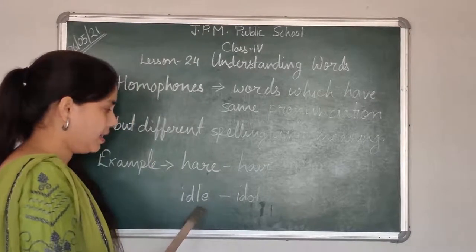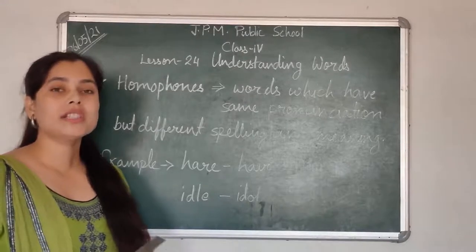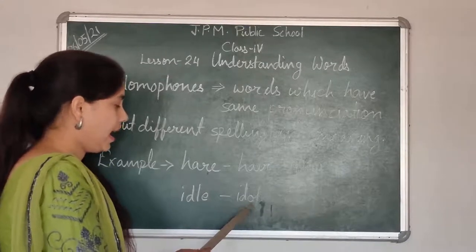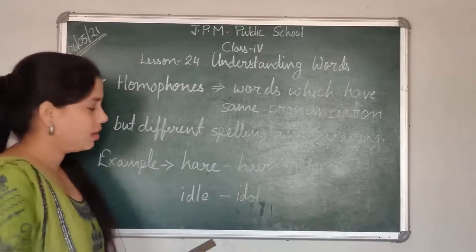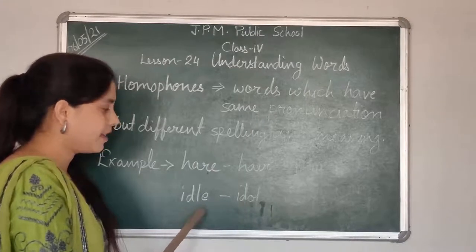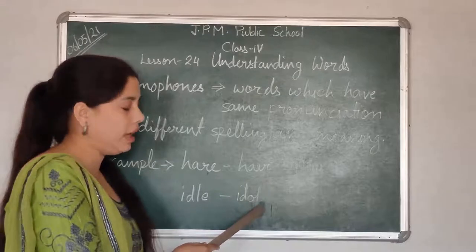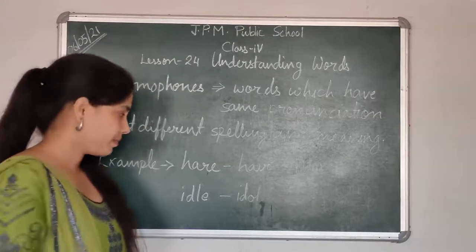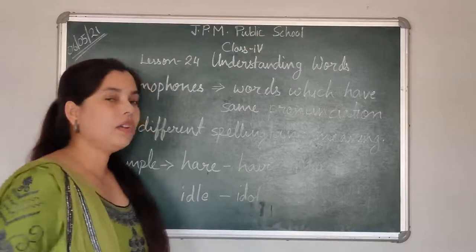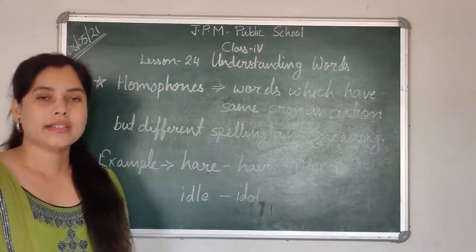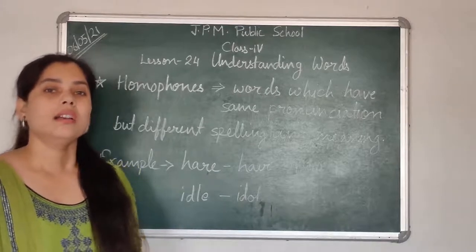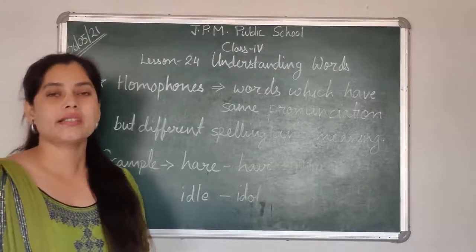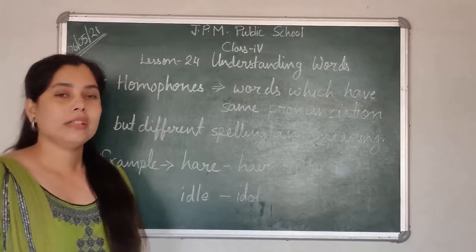Next, idle — I-D-L-E — means a person who is not having any work, without activity. Idol — I-D-O-L — also sounds alike. Both these words sound alike but they have different spellings and different meanings. Idol means a statue which is used by different peoples as God. Idol can also be used as a word which refers to people who are admired by someone. For example, if I like cricketers and my favorite cricketer is Rahul Dravid and I want to be like him, then he will be my idol.